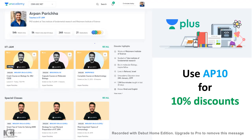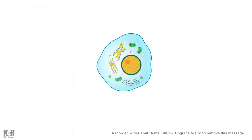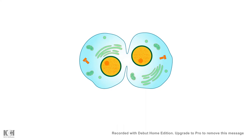When a cell divides from one to two cells, you can imagine the cell needs to produce a lot of membranes — the membrane of the new cell, the endoplasmic reticulum for the new cell. So a lot of membrane biogenesis has to be done alongside the replication process and all of the division that the cell needs to do.